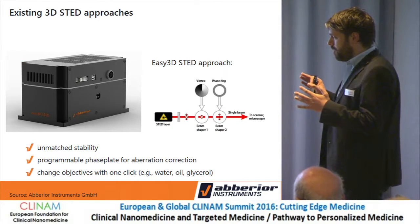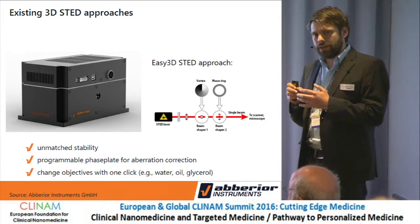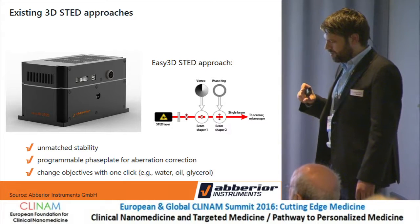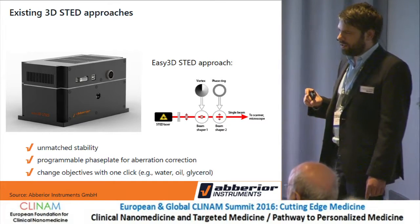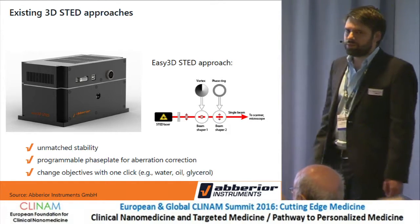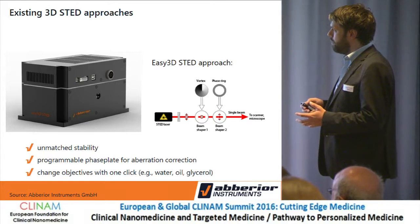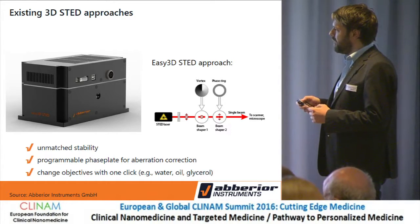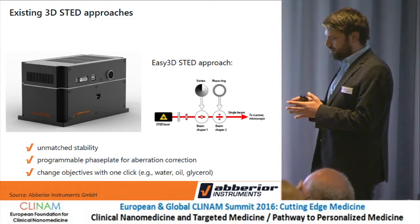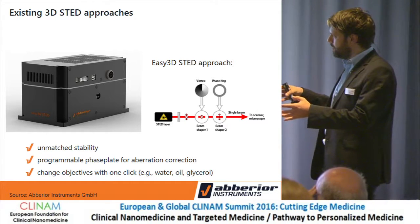Most of the time, STED microscopy is done only by enhancing resolution in x and y direction, with the donut-shaped second laser beam. The z-resolution is actually the same as in the confocal, and that's even worse than the x-y resolution. So it's highly favorable to also improve the z-resolution. There is another kind of STED beam for that — usually you want to combine both x-y and z. Normally you divide one beam into two: one the donut beam and the other the so-called bottle beam, and then you recombine the beams.